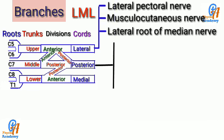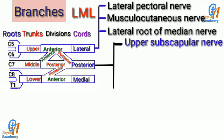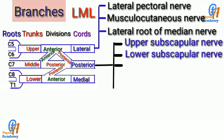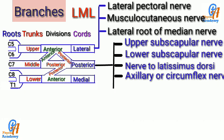Now we'll see the branches of the posterior cord. First is the upper subscapular nerve. Second is the lower subscapular nerve. Third is the nerve to latissimus dorsi, or thoracodorsal nerve. Fourth is the axillary or circumflex nerve. Fifth is the radial nerve. The first letters of each branch form U, L, N, A, R — so remember the branches of the posterior cord by the mnemonic ULNAR.